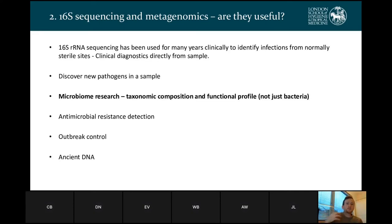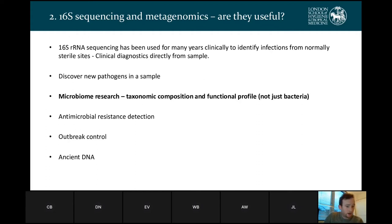So are 16S and metagenomics useful? Well, 16S sequencing has been used clinically for many years to identify infections from normally sterile sites, making clinical diagnostics directly from a sample possible. Metagenomics, on the other hand, can discover new pathogens in a sample, so you don't need to know what's there for it to be useful. They're both useful in microbiome research looking at taxonomic composition and functional profile. Metagenomics is also useful for antimicrobial resistance detection, outbreak control, and ancient DNA studies. Our interlaboratory study was focused on taxonomic composition, which is what I'll be talking about today.